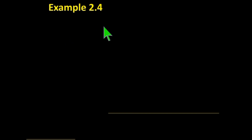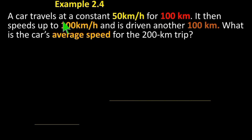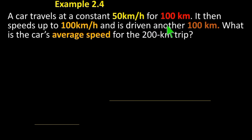Example 2.4: A car travels at a constant 50 km per hour for 100 km. It then speeds up to 100 km per hour and drives another 100 km. What is the car's average speed for the 200 km trip?